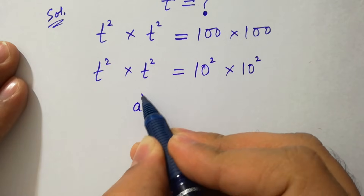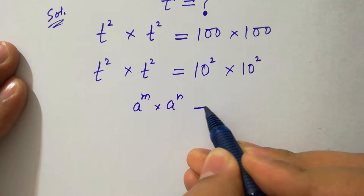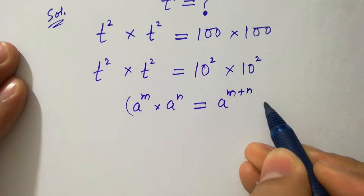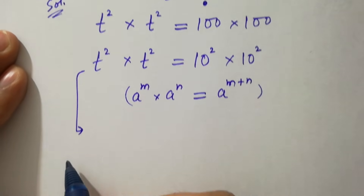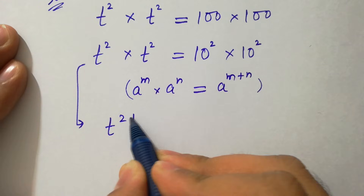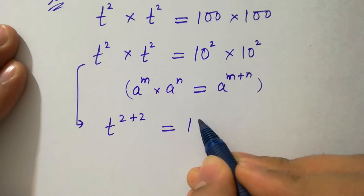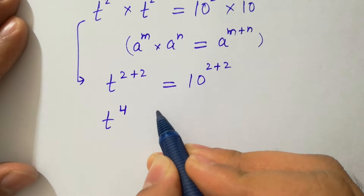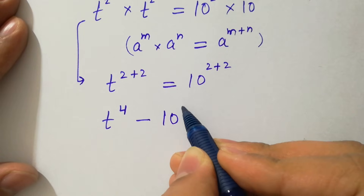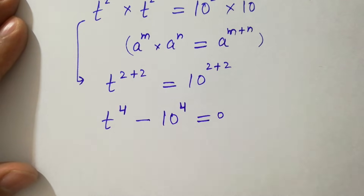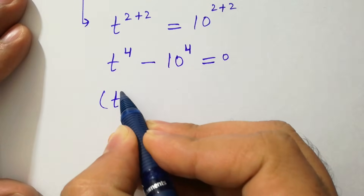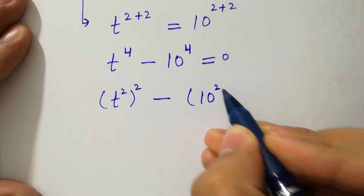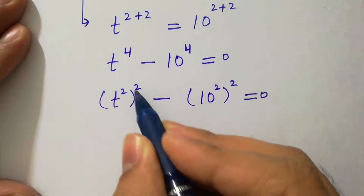As we know, a to the power m times a to the power n equal to a to the power m plus n. Then we have t to the power 2 plus 2 equal to 10 to the power 2 plus 2. So t to the power 4 minus 10 to the power 4 equal to 0, which is the same as t squared to the whole power 2 minus 10 squared to the whole power 2 equal to 0, since 2 times 2 is 4.